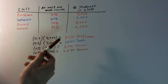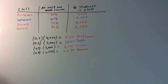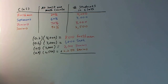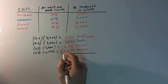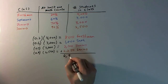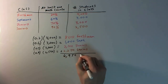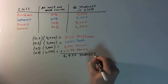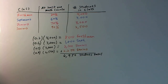So basically, now we can add these four numbers up and see how many students in total in this school have taken at least one math class. So if we sum that up, we'll get that there are a total of 6,950 students total that have taken at least one math class.